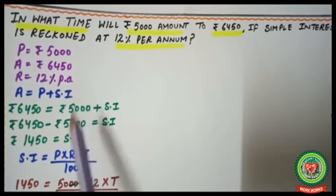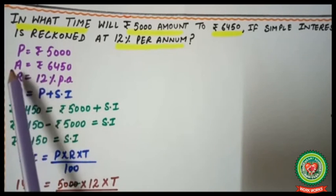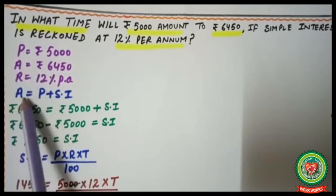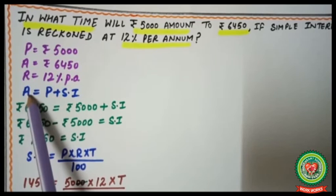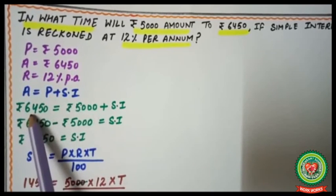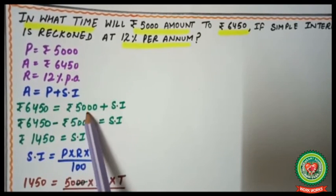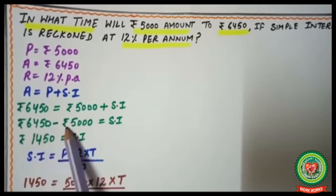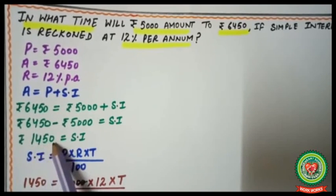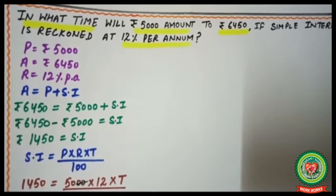Since SI is not directly given but amount is, we first use the formula: Amount = P + SI. So 6450 = 5000 + SI. Subtracting, SI = rupees 1450. Now we have the value of SI and can apply the main formula.